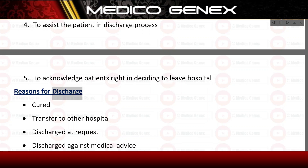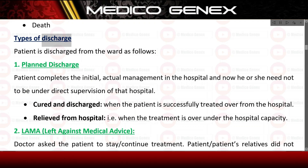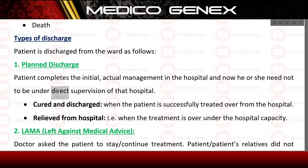Reasons for discharge include: cured, transfer to other hospital, discharged at request, discharged against medical advice, and death. Types of discharge: Planned discharge — the patient completes the initial and actual management in the hospital and no longer needs to be under direct supervision. Cured and discharged — when the patient has been successfully treated.